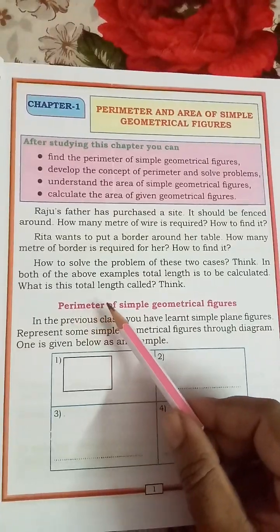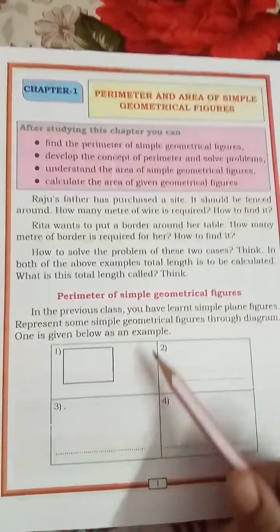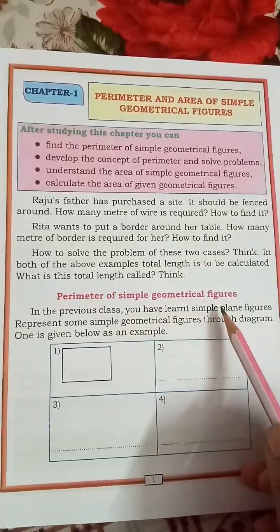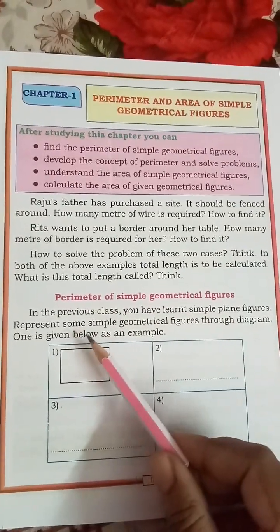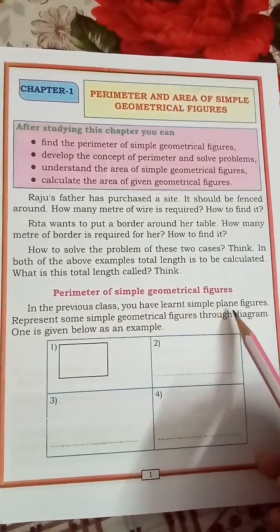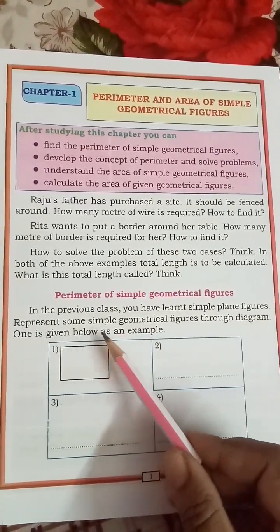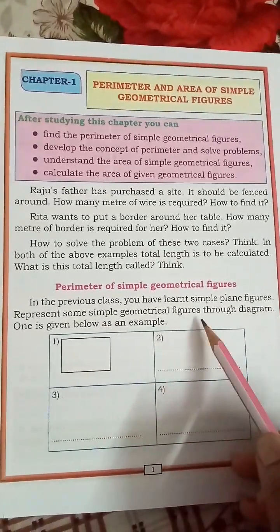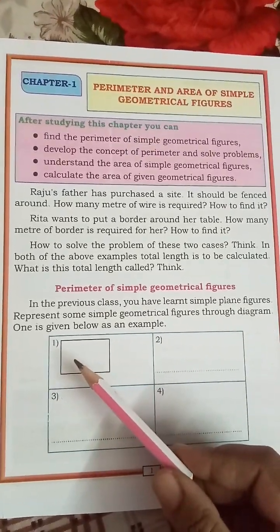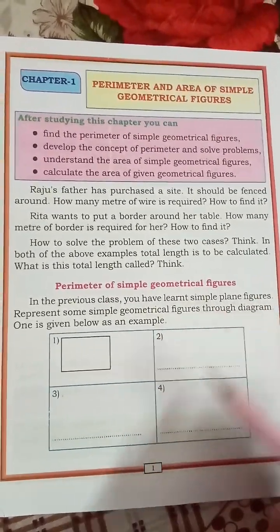What is this total length called? We will see now — perimeter of simple geometrical figures. In the previous class you have learned simple plain figures. We will represent some simple geometrical figures through a diagram, one is given below as an example.